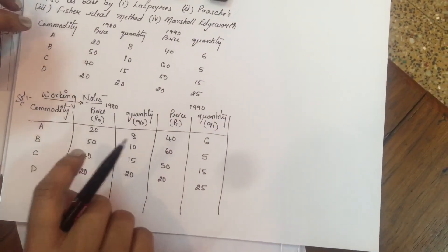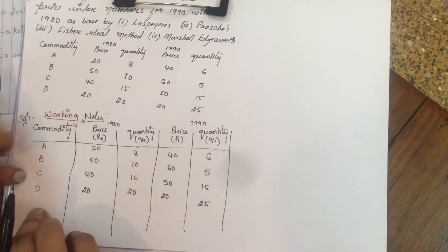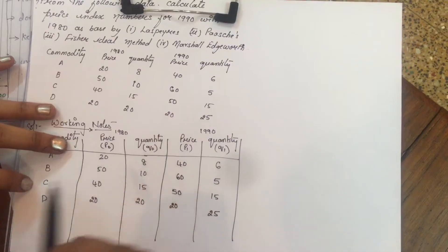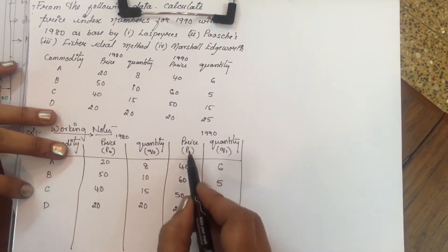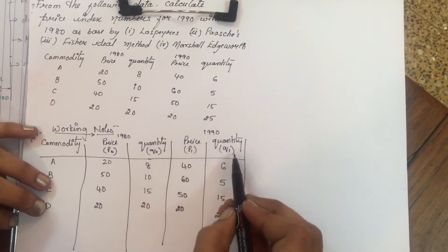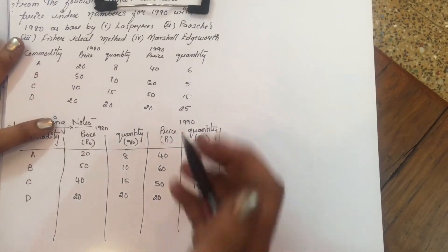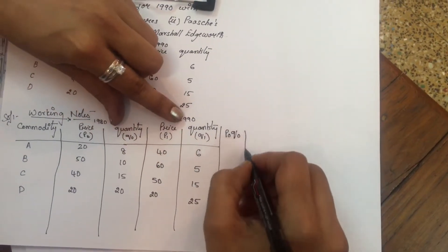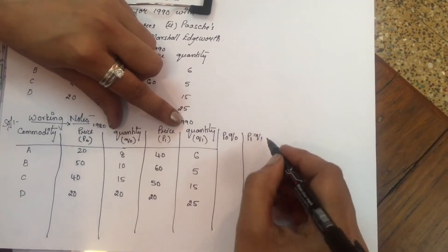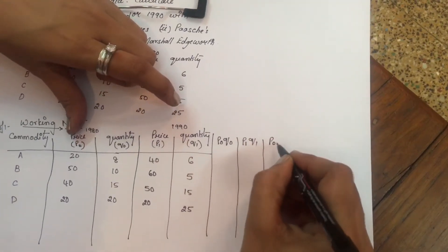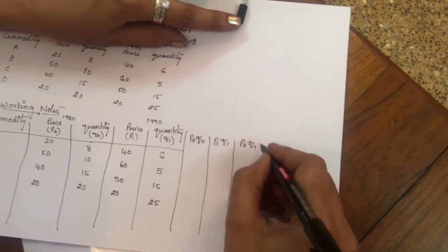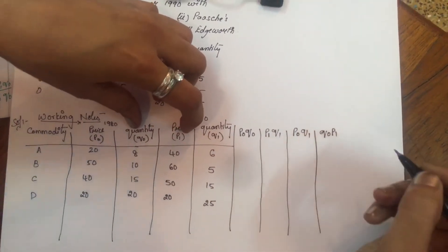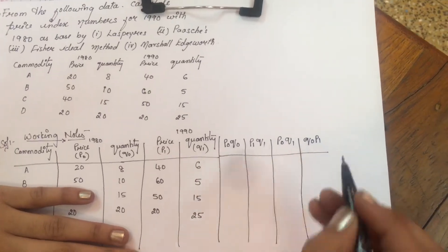First, working notes. Write down as it is which is given in the question. Commodities, price, quantity, price, quantity. This is our base price 1980, 1990 is our current price. So base price ke liye price P0, Q0. Price current year ke liye P1, Q1. So here we have P0 into Q0, then P1 into Q1, then P0 Q1, and Q0 P1.